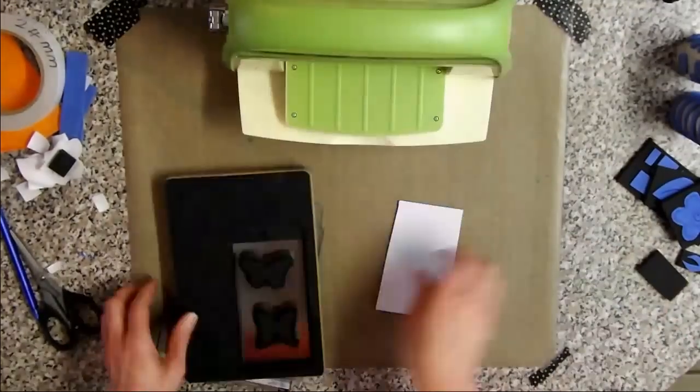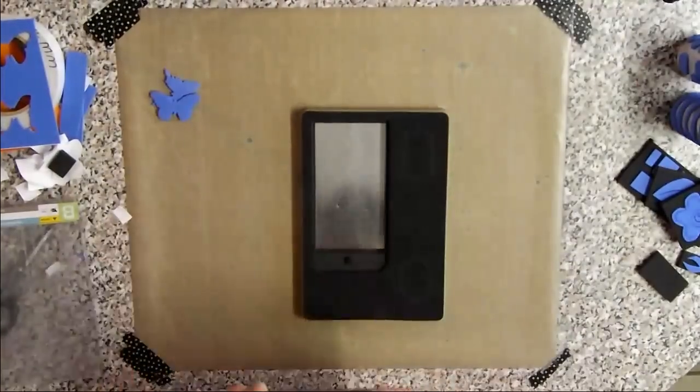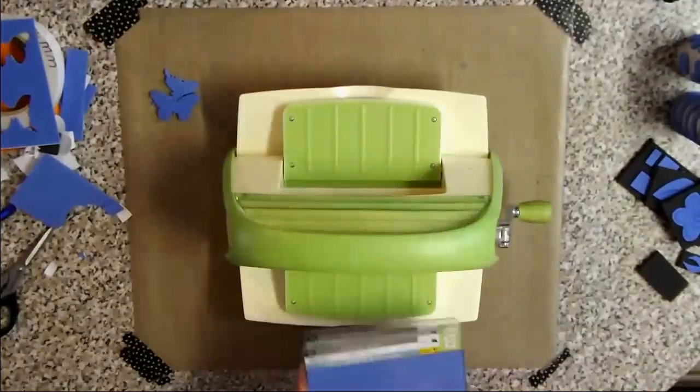I'm using thick and thin dies to cut out images out of the peel and stick foam. You can also draw patterns on these images with a ballpoint pen or an embossing tool.